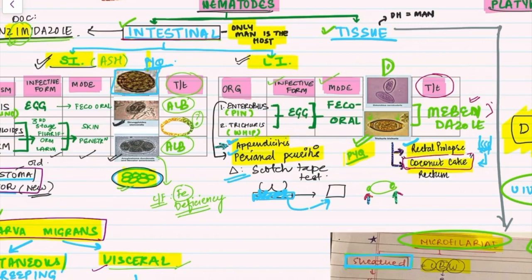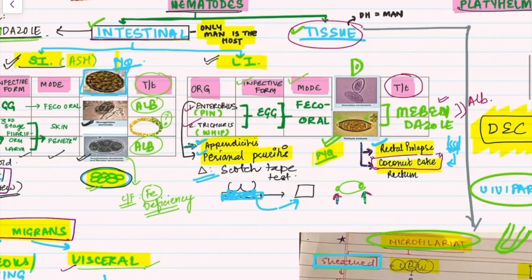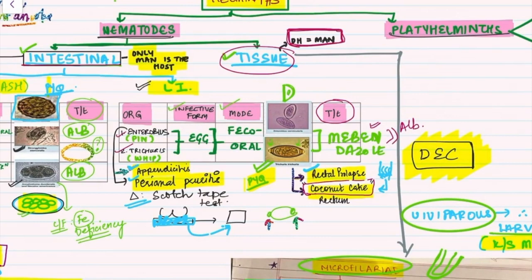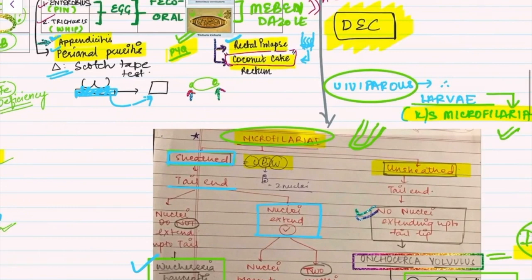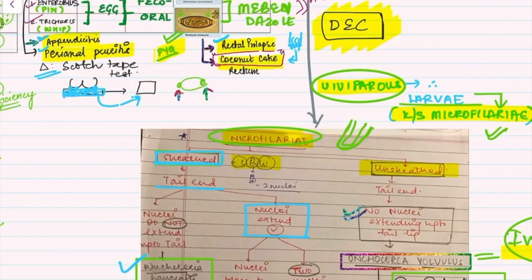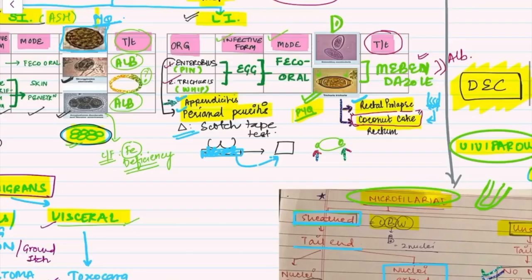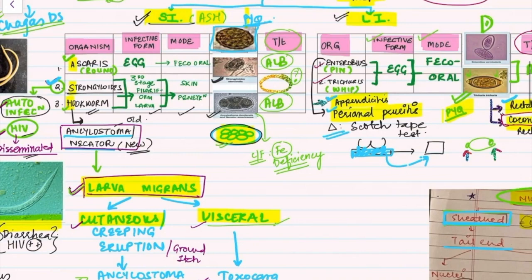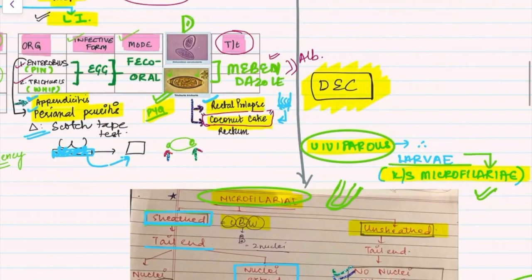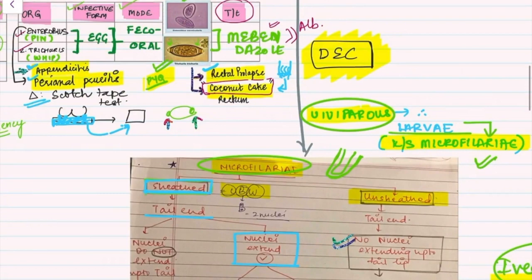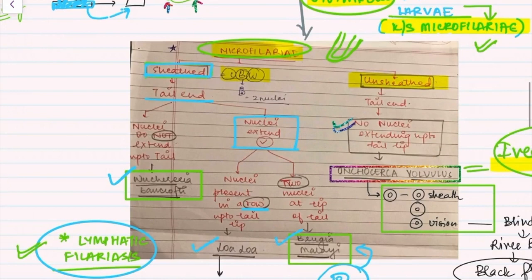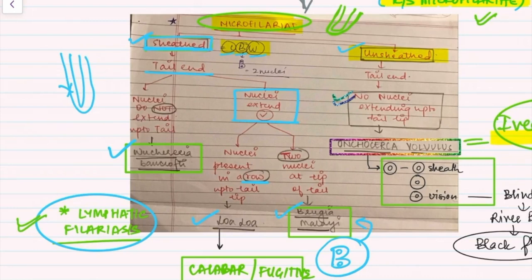Now let's talk about tissue nematodes. The definitive host is man, so you will have two hosts. All tissue nematodes are viviparous — unlike intestinal nematodes which lay eggs, tissue nematodes release larvae called microfilaria. The key is distinguishing organisms based on microfilaria morphology. Microfilaria can be sheathed or unsheathed. For sheathed organisms use the mnemonic LBW. Check the tail end: if nuclei do not extend to the tail tip, the answer is Wuchereria bancrofti.